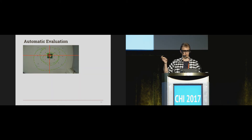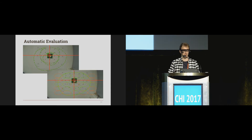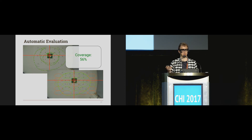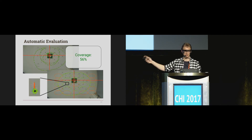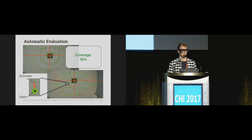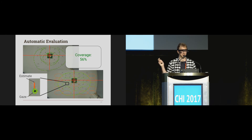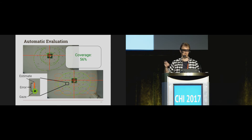Here's an example: you have the collected points and the coverage — approximately 56%, so the accuracy reported will be meaningful. We take one of the selected points not used for calibration, so they are unbiased. You have the actual gaze point and the estimation produced by our gaze estimation method, and we calculate the Euclidean distance between these two points as the mean accuracy, reporting the mean across all evaluation points.